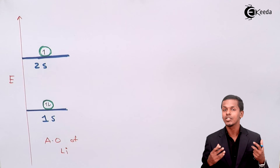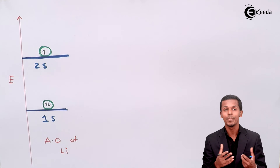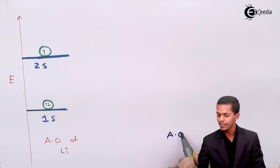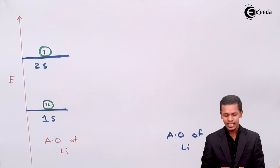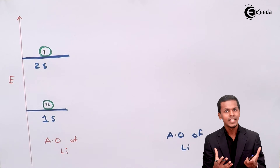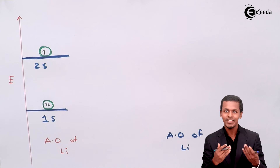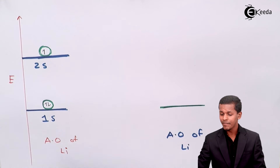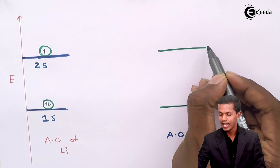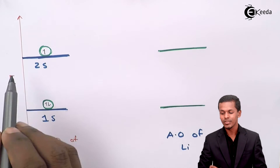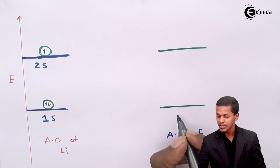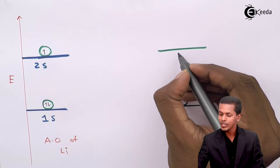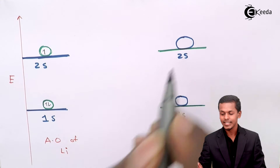Now, because we have to combine two lithium atoms to form a lithium molecule, the other lithium atom is represented here as another atomic orbital of lithium. Both lithium atoms have the same energy levels because they both consist of 1s orbitals with the same energy. The 2s orbital is also represented here. Both the 1s and 2s energy levels are the same for both lithium atoms, each consisting of one orbital.